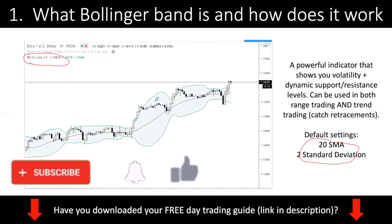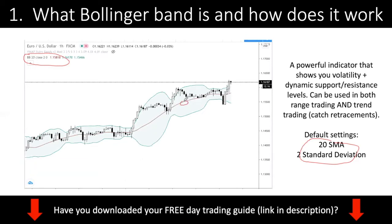This indicator is made out of three things. First, you have the 20-period moving average — in this case, the simple moving average. Then you have the upper band, which is plus two standard deviations, and the lower band, which is minus two standard deviations. This upper and lower band acts as a dynamic support and resistance level. It's very powerful because it can precisely tell you where the market could potentially stop — where is resistance and where is support.